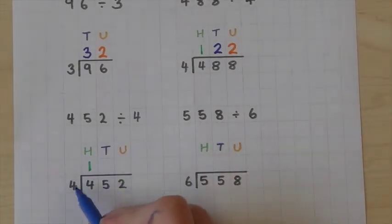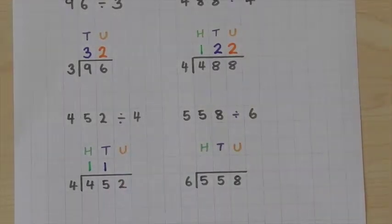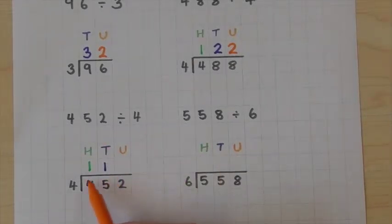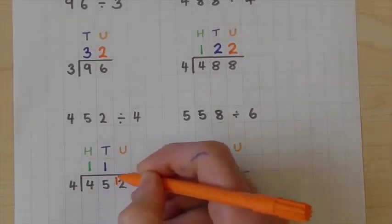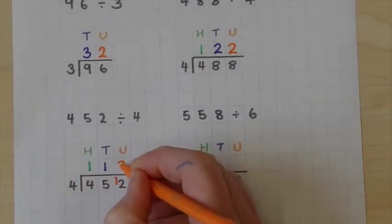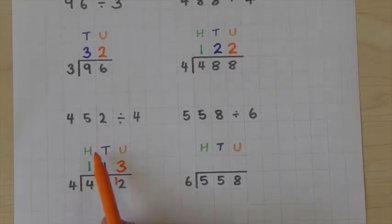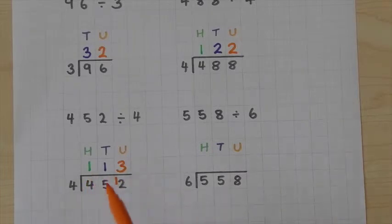Moving on to our tens column, 4 goes into 5 one time, but this time not exactly — it goes in one time with one remaining. That is one ten remaining, so we can regroup that one ten with our units. We move it over, put it with our units, and our units now become 12. We can then carry on: 4 goes into 12 three times exactly. That completes our answer: 113. And once again, we can check by multiplying 113 by 4, which gives us 452.